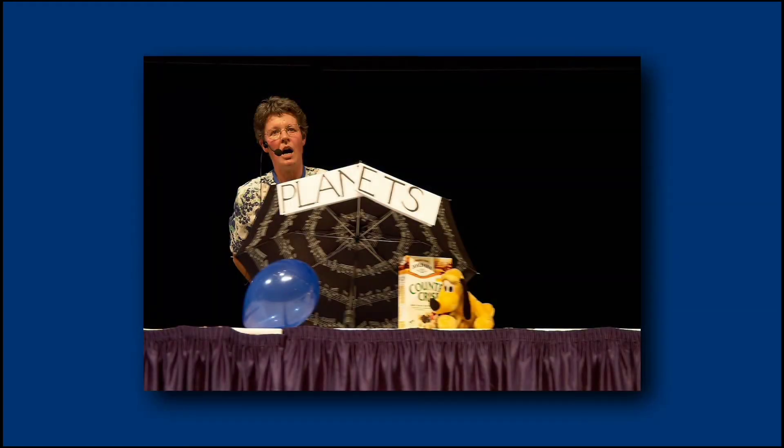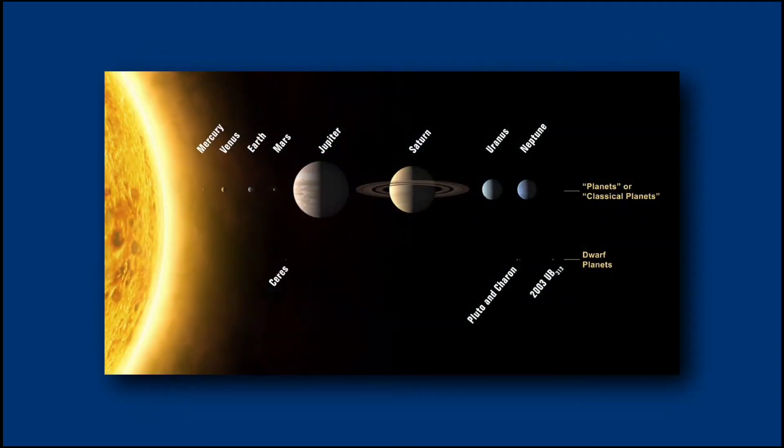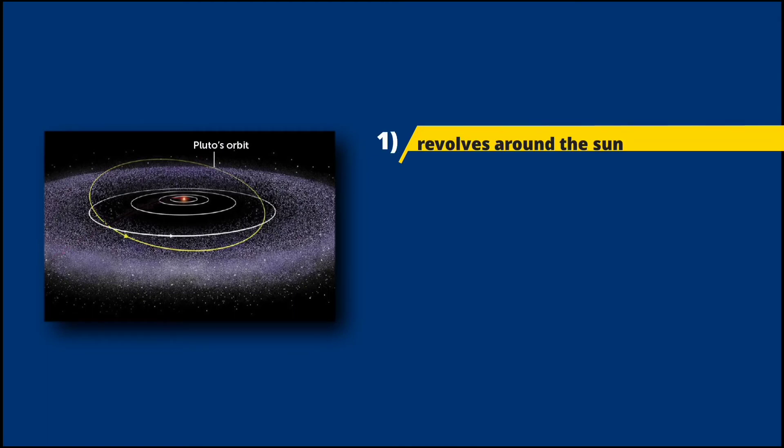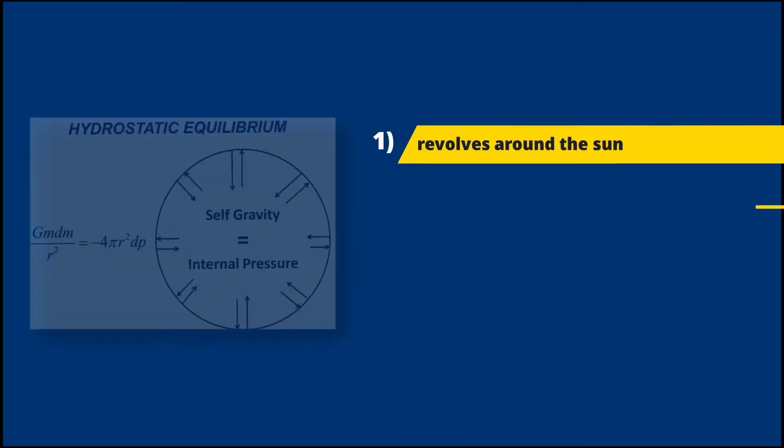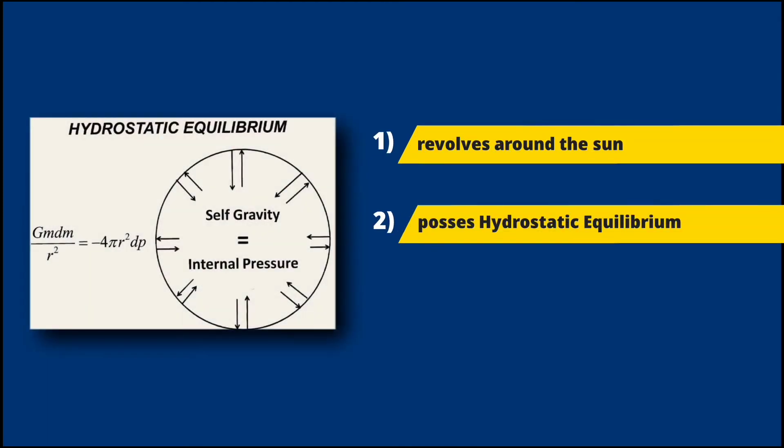According to this resolution, there are three conditions for an object in the solar system to be considered a planet. First, the object must be in orbit around the sun. Second, the object must be massive enough to be rounded by its own gravity. More specifically, its own gravity should pull it into a shape defined by hydrostatic equilibrium.